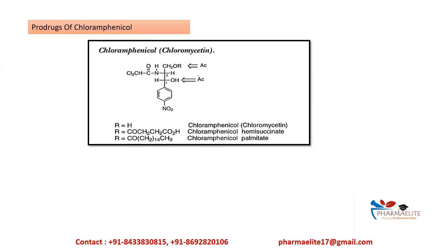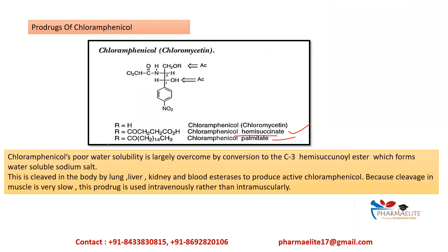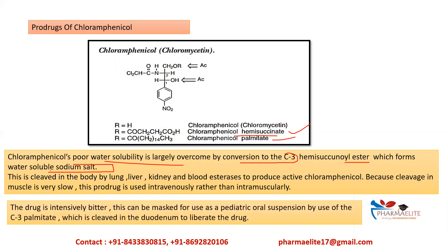Now we'll see the products of chloramphenicol: chloramphenicol hemisuccinate and chloramphenicol palmitate. Chloramphenicol's poor water solubility is largely overcome by conversion to the C3 hemisuccinate ester, which forms a water-soluble sodium salt. This prodrug enhances the water solubility of chloramphenicol. It is cleaved in the body by lung, liver, kidney, and blood esterases to produce active chloramphenicol. Because cleavage in muscle is very slow, it is given mostly by the intravenous route.